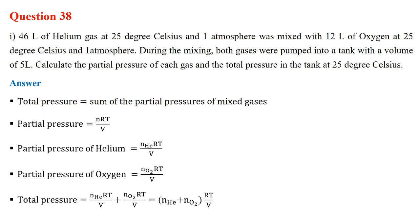Each gas is exerting its partial pressure. We have a partial pressure of helium and a partial pressure of oxygen in the 5-liter tank, and the mixing was at 25 degrees Celsius. We need to calculate the partial pressure of each gas and the total pressure in the tank at 25 degrees Celsius.